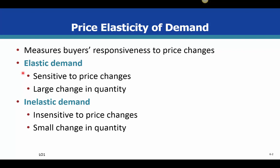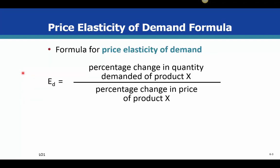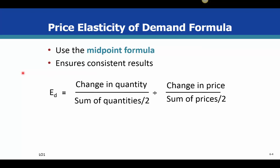The typical formula for price elasticity of demand is the percentage change in quantity demanded of product X divided by the percentage change in price of product X. Quantity is the numerator and price is the denominator.